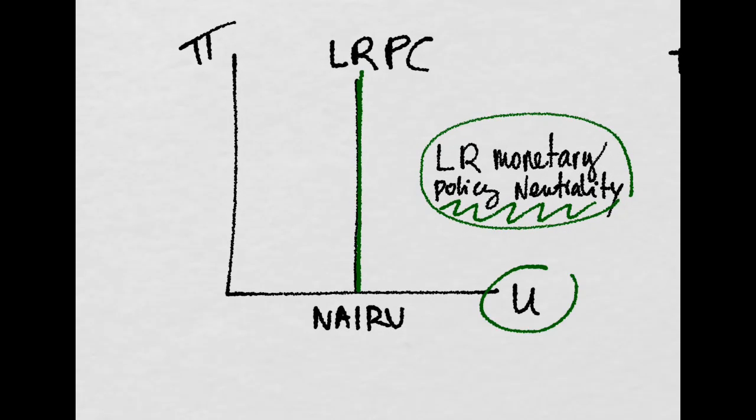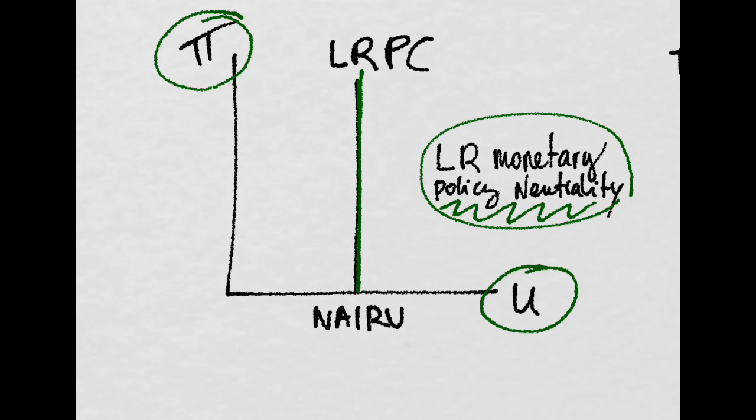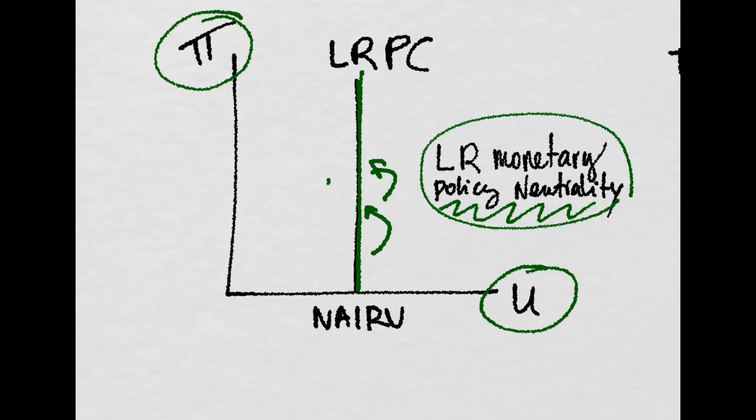There is no possible trade-off between unemployment and inflation, because in the long run, monetary policy is neutral. Meaning that, you cannot affect the unemployment level in the economy by, for example, expanding the money supply. Because unemployment will always return to its natural level, and you will be left with higher prices.